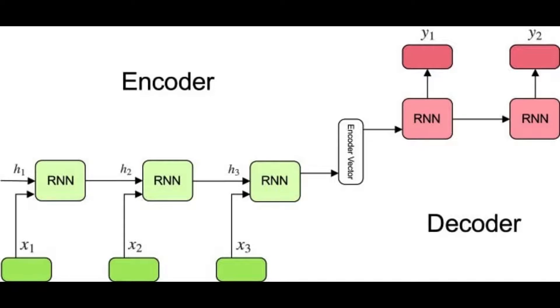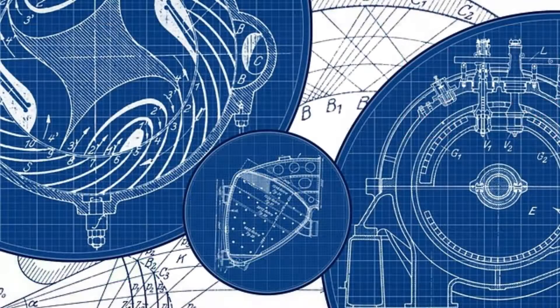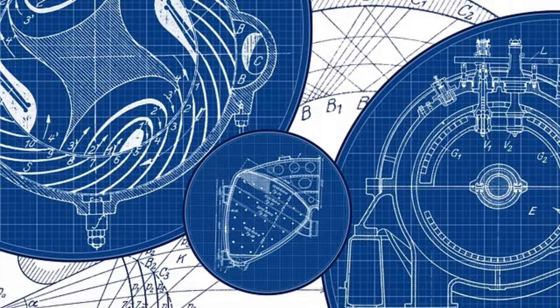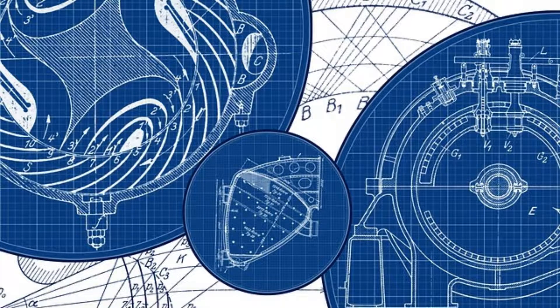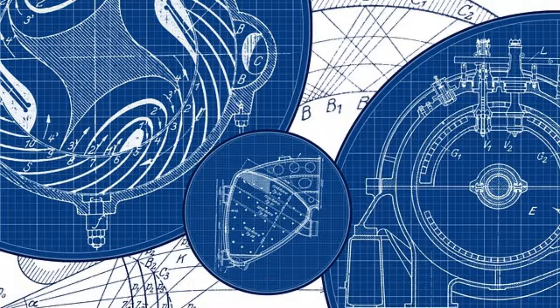The encoder vector is the last hidden state produced from the encoder part of the model. It is computed using the formula above. This vector aims to summarize the information for all input elements to help the decoder make correct predictions. It serves as the first hidden state of the decoder part of the model.